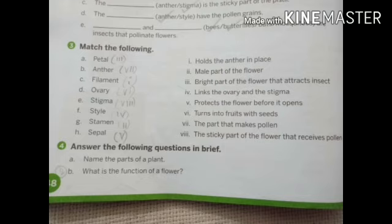Now number F: Style, matching with number 4 - Links the ovary and the stigma. Now number G: Stamen, matching with number 2 - Male part of the flower. Now number H, which is Sepal, matching with number 5 - Protects the flower before it opens.